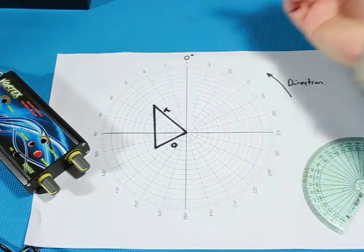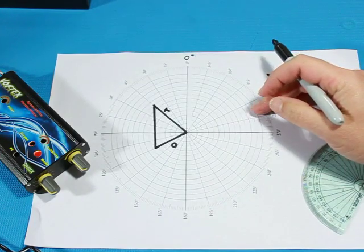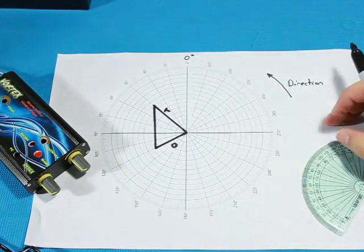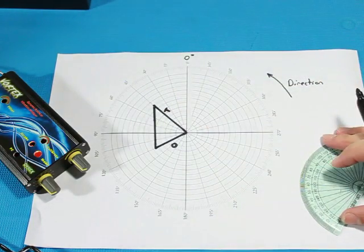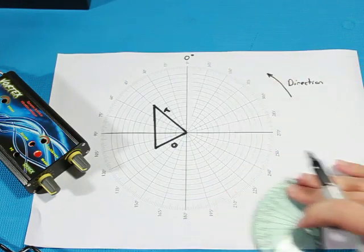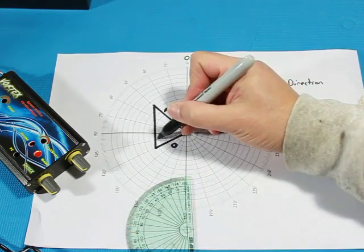So this line actually becomes what they call the correction vector. In other words, what do you need to do to correct the vibration or the imbalance, I should say. Okay, so once we've got this on the plot, what we need to do is measure the included angle.